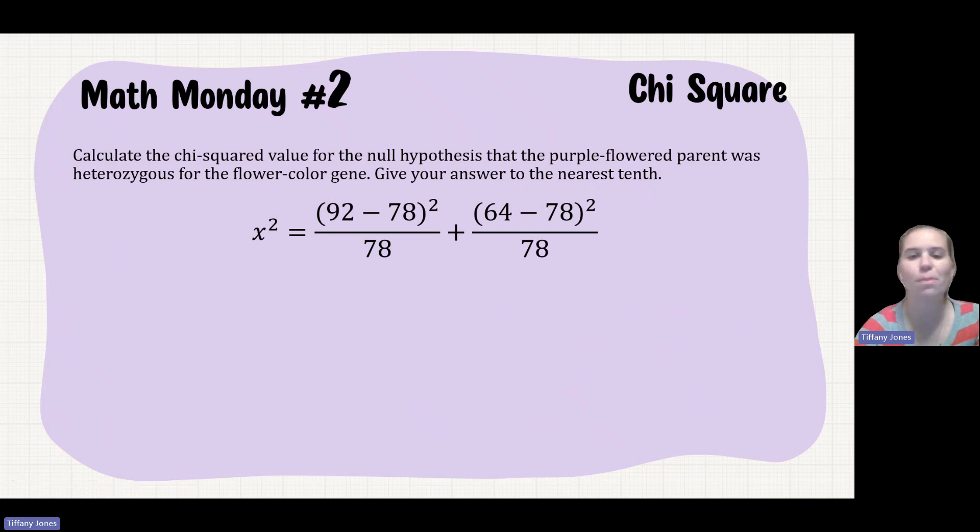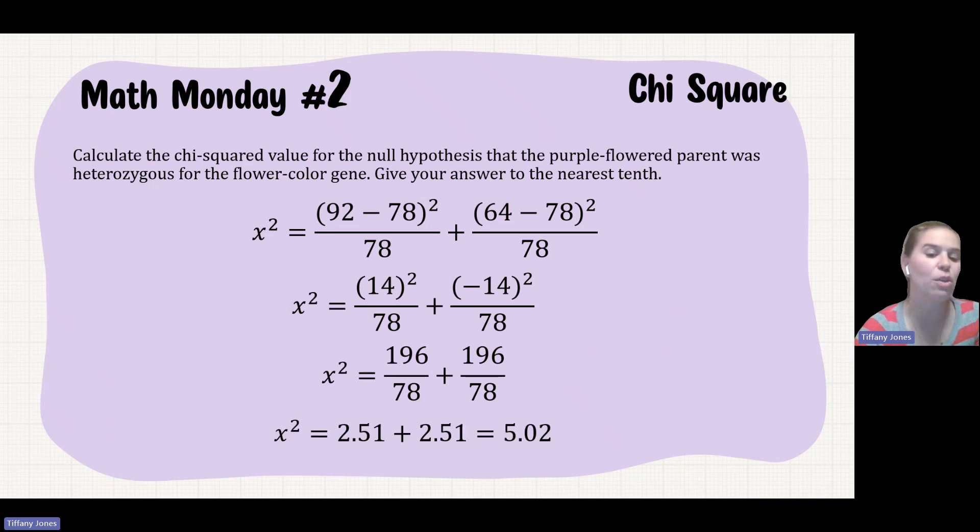So if we do this math, 92 minus 78 gives me 14. 64 minus 78 gives me negative 14. If I square that, I get 196. And I'll take each of those and divide by 78, giving me 2.51 plus 2.51, giving me a grand total of 5.02. It does tell me I need to give my answer to the nearest tenth. So I'm going to round that to 5.0.